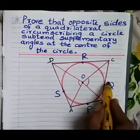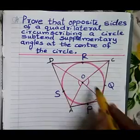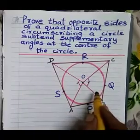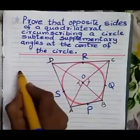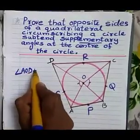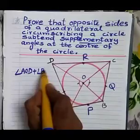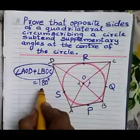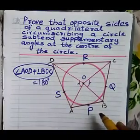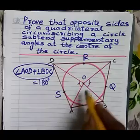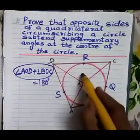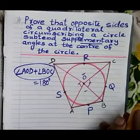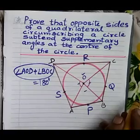These two angles — angle AOD and angle BOC — are supplementary, meaning their sum is 180 degrees. We are going to prove that angle AOD plus angle BOC equals 180 degrees. Similarly another pair: angle AOB and angle COD — the sum of these two angles is also 180 degrees. We will prove one pair.